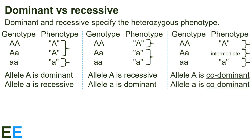Sometimes neither allele is dominant or recessive, and the heterozygotes have a different phenotype from either homozygote — usually some kind of intermediate phenotype. This would be something like plants that can be tall, short, and medium, or flowers that can be red, white, and pink. When this happens, we term these alleles codominant. You may also see the term additive used instead of codominant, but that tends to be used mainly by quantitative geneticists. Codominant is used more often.